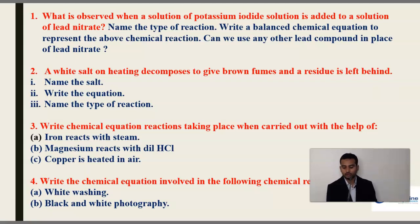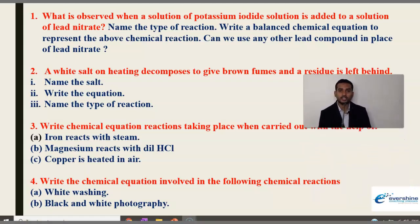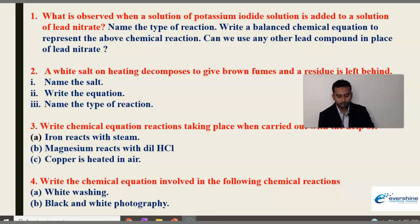Next question: Write chemical equations for reactions taking place in the following situations — when iron reacts with steam (use H₂O), when magnesium reacts with dilute hydrochloric acid, when copper is heated in air (take air as O₂). Also write the chemical equation involved in whitewashing and black-and-white photography.